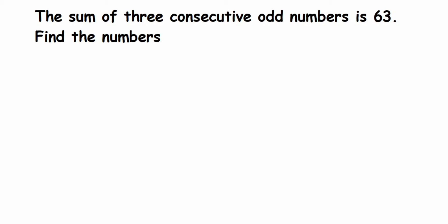Hi everyone, here's a question on a linear equation. The question is: the sum of three consecutive odd numbers is 63, find the numbers. Consecutive means a number which comes one after another, like one number and the immediate next number. Since we're talking about three consecutive odd numbers, let's take an example of odd numbers.